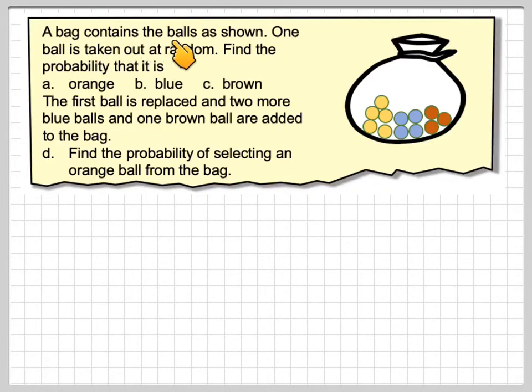A bag contains the balls as shown. One ball is taken out at random. Find the probability that it is orange, blue, or brown.